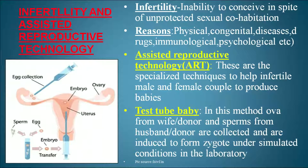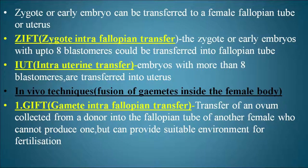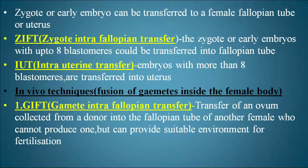The first ART method is the test tube baby technique. Ova from the wife or a donor and sperms from the husband or donor are collected and induced to form a zygote under simulated laboratory conditions similar to the human body. The zygote or early embryo can then be transferred to the female: ZIFT (Zygote Intra-Fallopian Transfer) transfers the zygote or early embryo with up to eight blastomeres into the fallopian tube; IUT (Intrauterine Transfer) transfers embryos with more than eight blastomeres into the uterus.